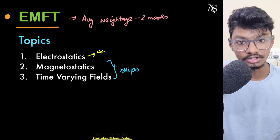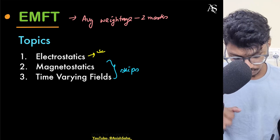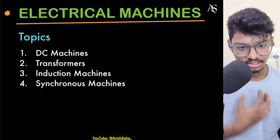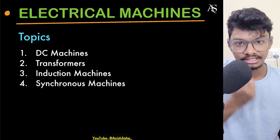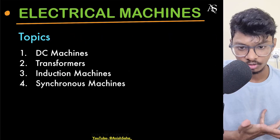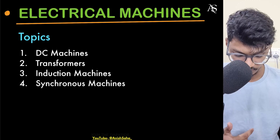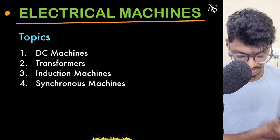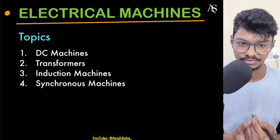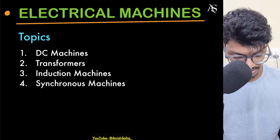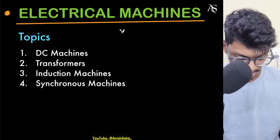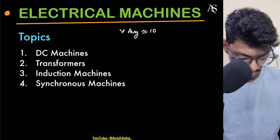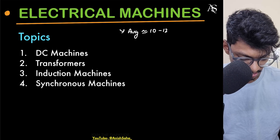Next, let's come to Electrical Machines. Unfortunately, I can't say you can skip any topic here because all four are important: DC machines, transformers, induction machines, and synchronous machines. The average weightage is around 10 to 12 marks.